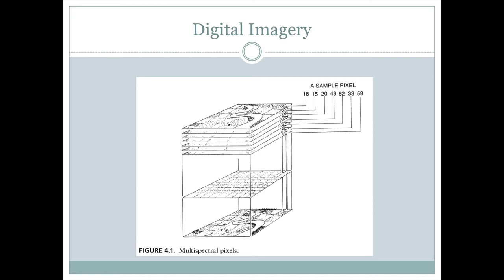So with digital imagery, we once again have a number of different bands associated with the imagery. Each one of those bands represents some different portion of the electromagnetic spectrum, such as red, green, blue, infrared, or other portions that has been recorded on one of these layers.